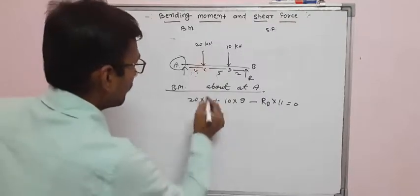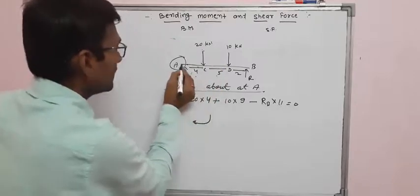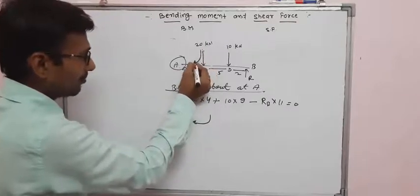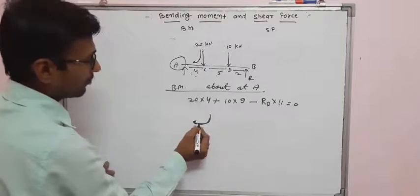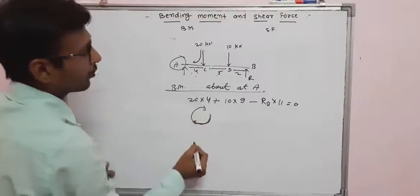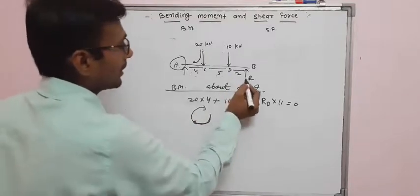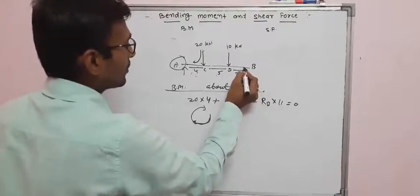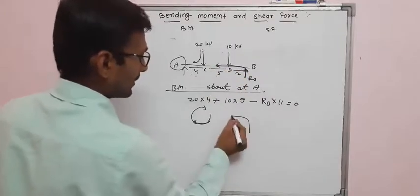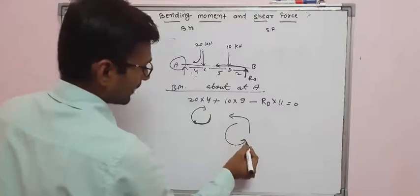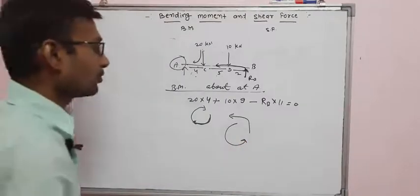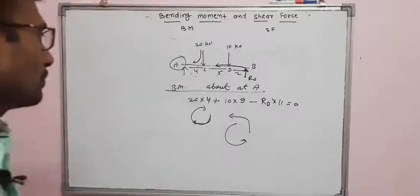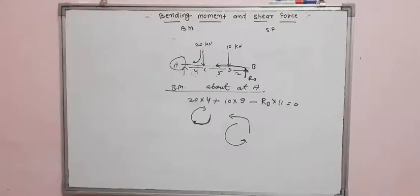For example, about point A, the force moved towards the distance gives a clockwise rotation — so that moment is positive clockwise. For the reaction RB, moving the force towards its distance gives anticlockwise rotation. Generally, anticlockwise is taken as positive and clockwise as negative.